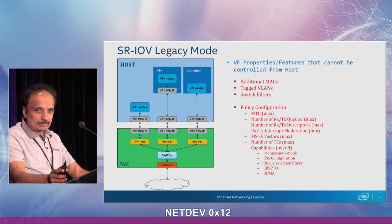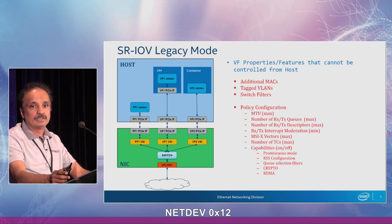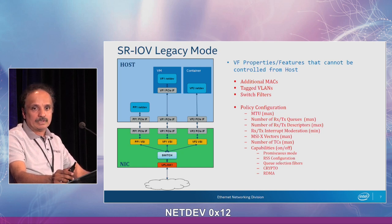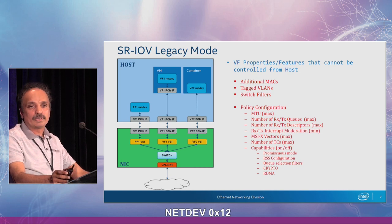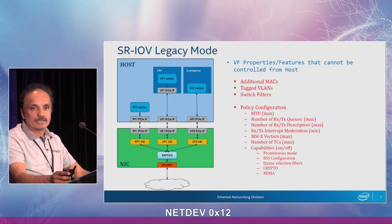The next slide shows the features that cannot be controlled from the host. It is not possible to add additional MAC filters, additional VLANs, or switch filters when the VFs are assigned to a VM or a container from the host. Also, for policy configuration, we cannot change the MTU or set a maximum MTU, set a max on the number of queues the VM can request, or the descriptors, interrupt moderation, MSIX vectors, and port capabilities. There is no way to control the capabilities of a VF assigned to a VM, such as whether it can do promiscuous mode, RSS, or support advanced features like crypto or RDMA.